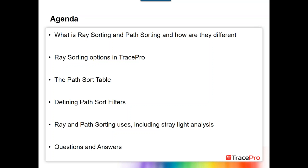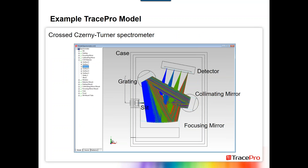If you have any questions during the webinar, please feel free to type them into that question box on the control panel. The example we're going to look at today is a simple cross Czerny-Turner spectrometer. Key features include a case with an anodized finish, a narrow slit that lets the light in, a collimating mirror, a grating to split the light into component wavelengths, a focusing mirror, and a detector. This model gives us a lot of different options for different paths and ray sorting features.